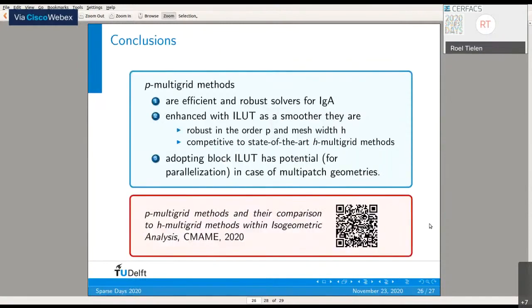To conclude this talk, the take-home message is that P-multigrid methods are efficient and robust solvers for isogeometric analysis. If you apply them with an ILU(T) smoother, they are robust in approximation order P and mesh width H. Furthermore, they are competitive to current state-of-the-art H-multigrid methods. Finally, we consider the block ILU(T) smoother, which has potential for parallelization in case of multi-patch geometries.